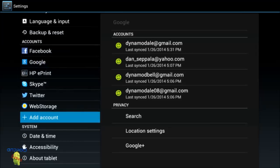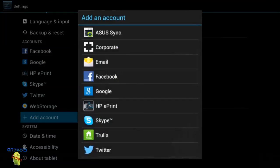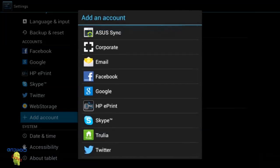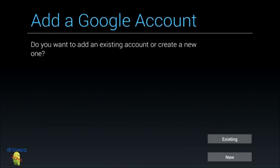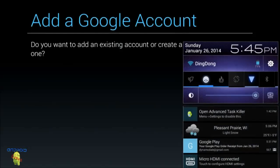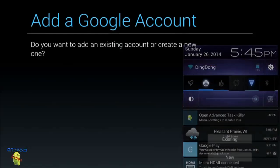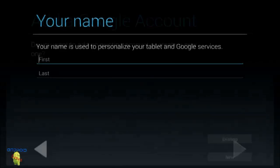Basically what you want to do is click 'Add Account.' When you add accounts, all the apps you have installed that can have accounts are listed. You want to add a Google account. When you add a Google account you can make a new one or log in with an existing one, so if you have multiple Google accounts just click 'Existing' and it'll log you in.